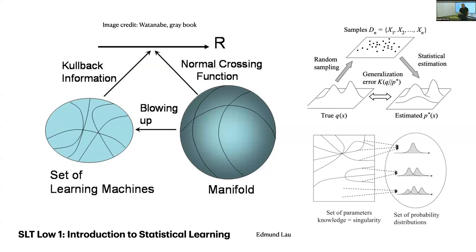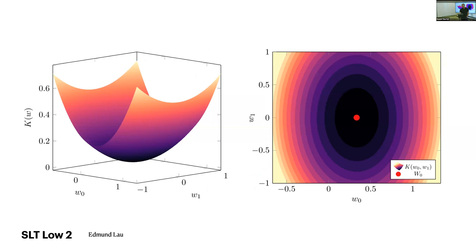That's it for SLT High. SLT Low — the first one is today. Edmund Lau is going to present an introduction to statistical learning. You'll learn the basic language of Bayesian probability and see many of the players that will appear throughout the rest of the week: KL divergence, generalization error, etc. In the second lecture of SLT Low, Edmund's going to build on that and take you from the regular case — classical statistical learning theory — and step through some intermediate cases between there and the horrible hundred-million-dimensional singularity of GPT-4.